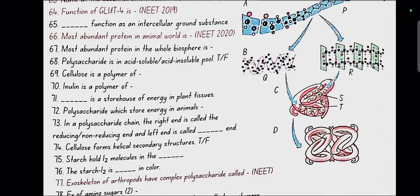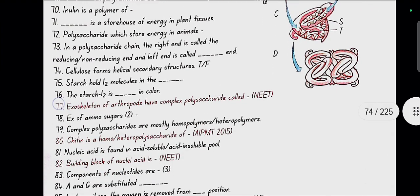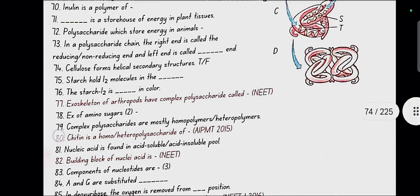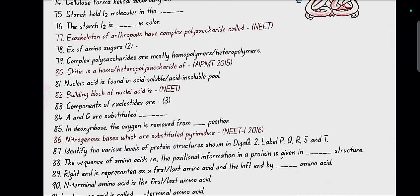Cellulose is a polymer of glucose. Inulin is a polymer of fructose. Starch is a storehouse of energy in plant tissues. Polysaccharide which stores energy in animals is glycogen. In a polysaccharide chain, the right end is reducing and the left end is non-reducing. Cellulose forms helical secondary structures. No false, starch does. Starch holds I2 molecules in helical structure. The starch-I2 is blue in colour. Chitin is a homopolysaccharide of N-acetylglucosamine.